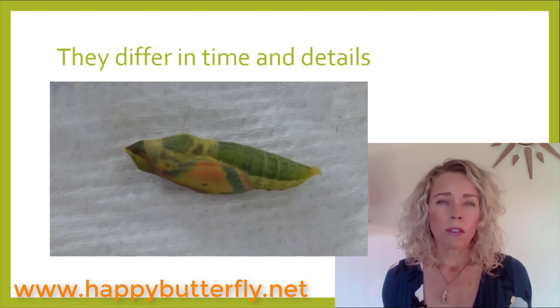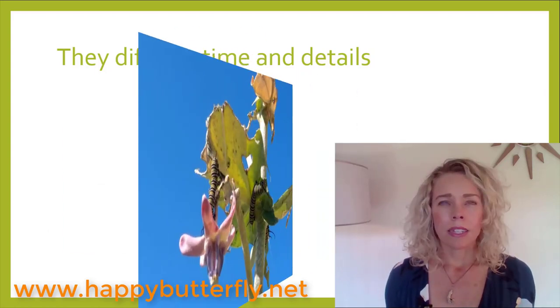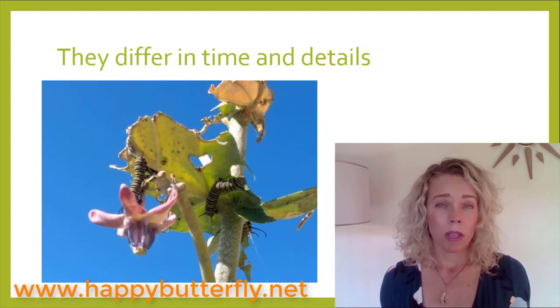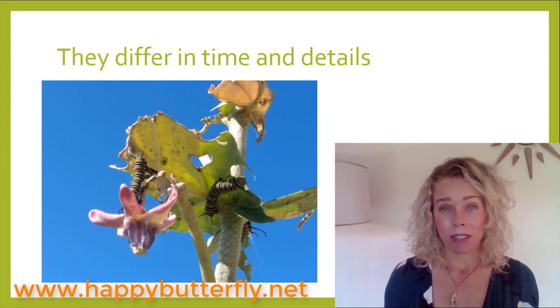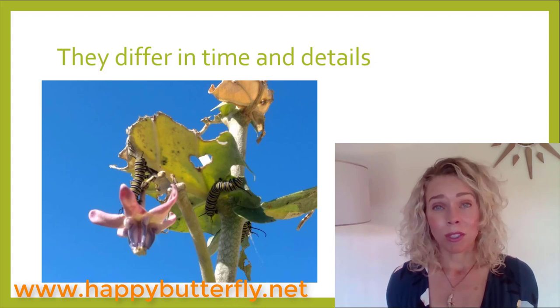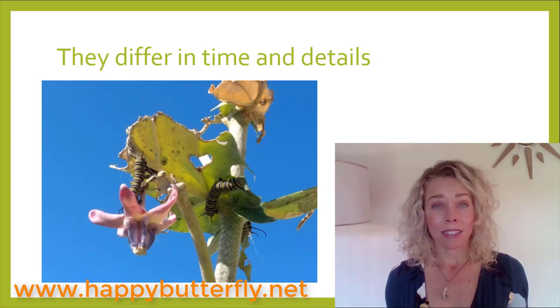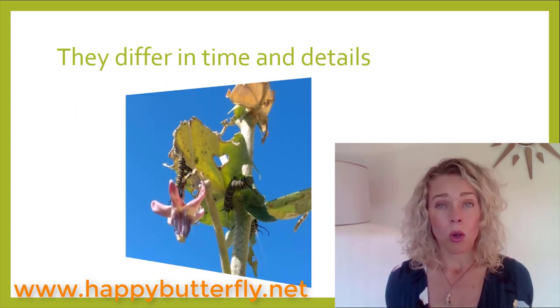Different butterflies use different plants. Insect development is contingent on ambient temperatures. You can mathematically plot how fast it's going to take an insect to develop if you know the temperatures where it's developing.